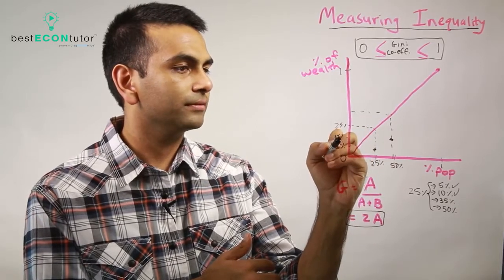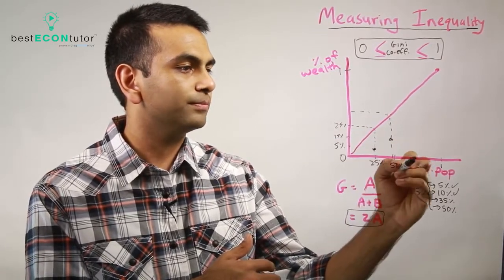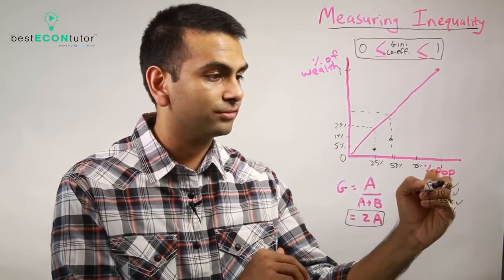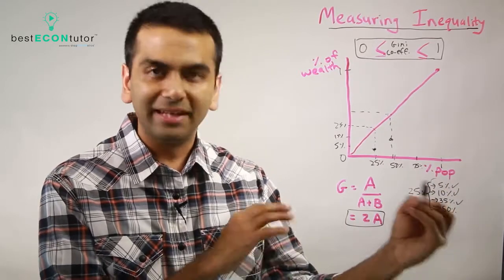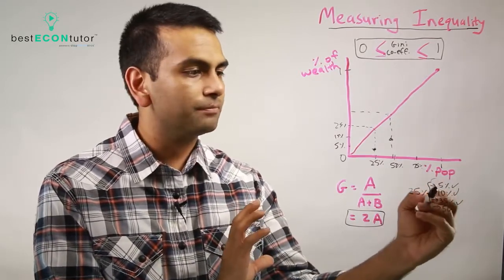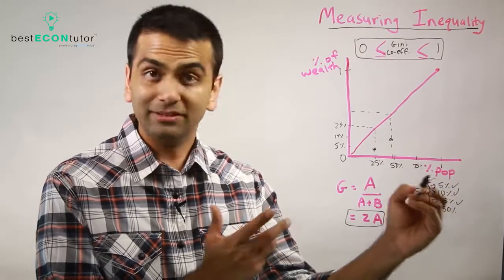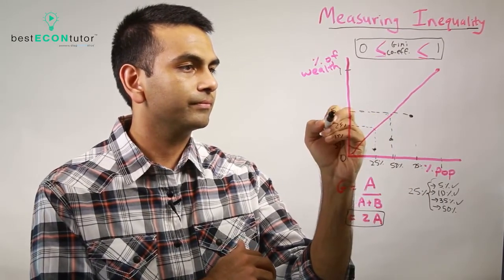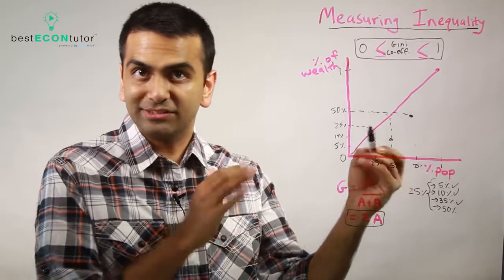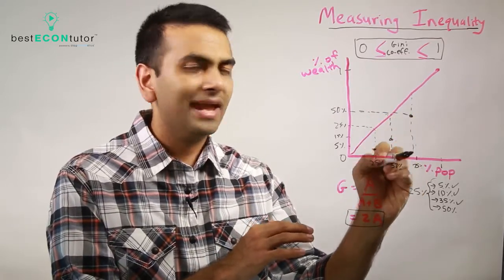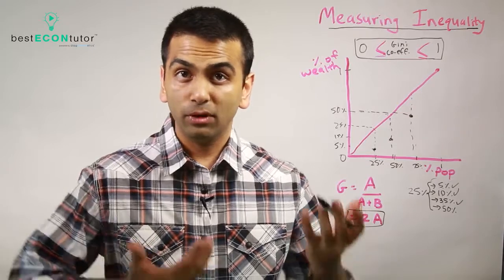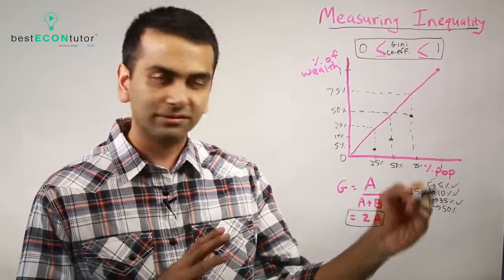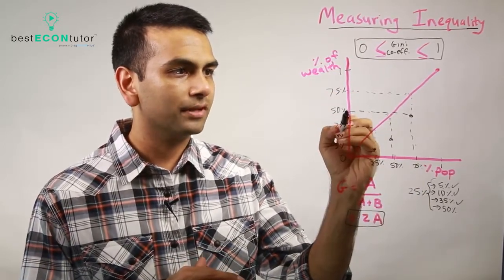So far we have these points. The bottom 75%, that's these three quartiles, have 5 plus 10 plus 35, which is 50% of the wealth. Notice again, that's still less than what the line of perfect equality would have been. If everyone was equal, the bottom 75% would have 75% of the wealth—that's what the red line tells us. But in this society, the bottom 75% have 50% of the wealth.